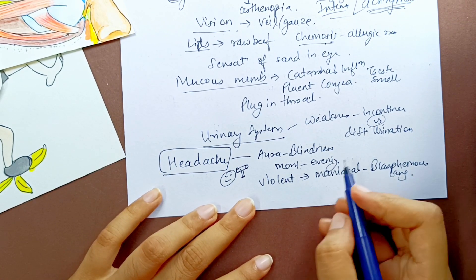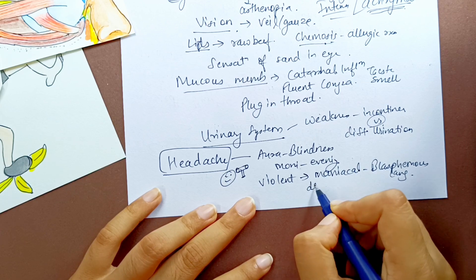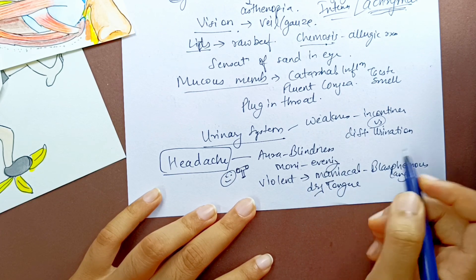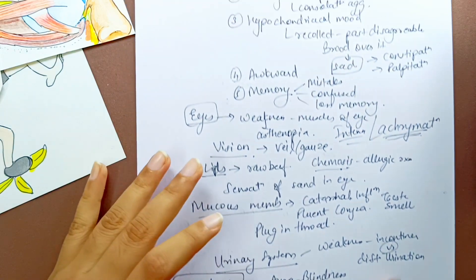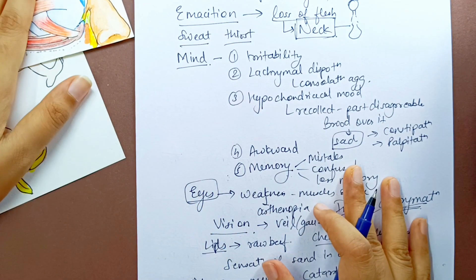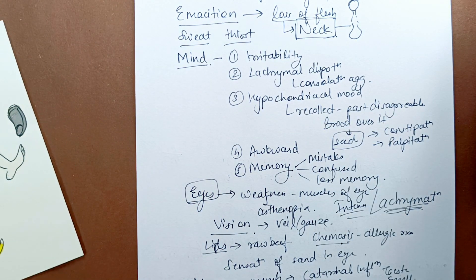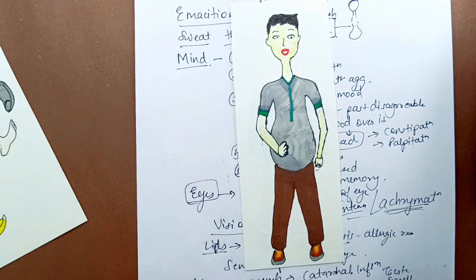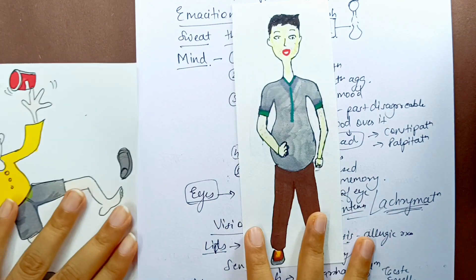So this is what we learned about Natrium Muriaticum in this part — the emaciation, constitution, sweat, thirst, mental symptoms, headache, eye symptoms, mucous membrane symptoms, and urinary symptoms. We will cover many more symptoms in Part 2 of Natrium Muriaticum from Dr. NM Chaudhary's Materia Medica.